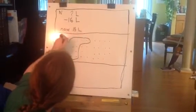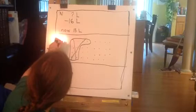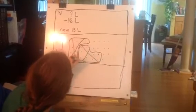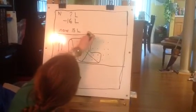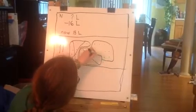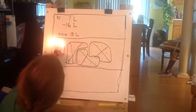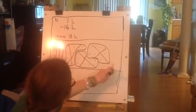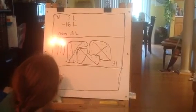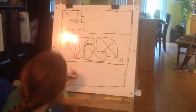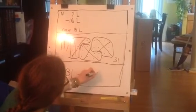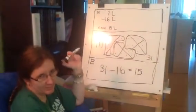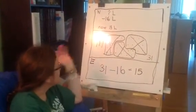I'm going to make groups of 10. There's a group of 10, and there's a group of 10, and there's a group of 10. She must have had 10, 20, 30, 31 Legos at the beginning. Let's see if this makes sense: 31 Legos take away 16 Legos equals 15 Legos. Does that make sense? It does. So the answer is 31.